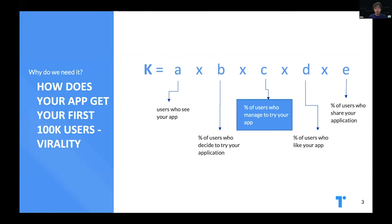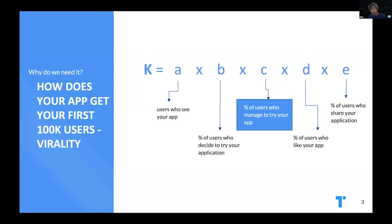If it's below one, you have to tweak your factors so that it does become above one. In crypto, the hardest factor to improve is the percentage of users who manage to try your application. A big reason for this is that when a user first tries a blockchain or decentralized application, they first have to understand a whole host of concepts, including seed phrases, public-private key pairs, and gas transactions. It's a huge and steep learning curve for somebody who's just dived right in.